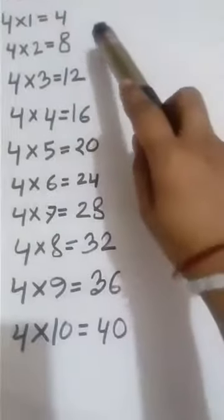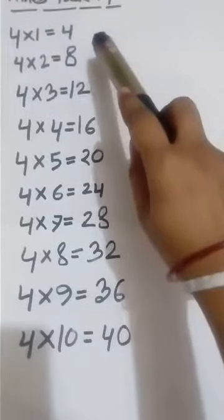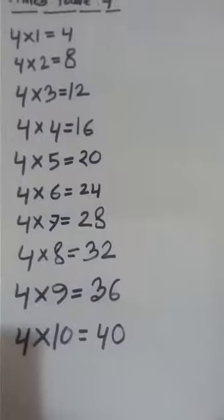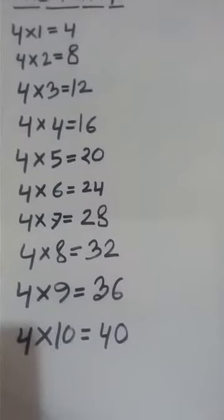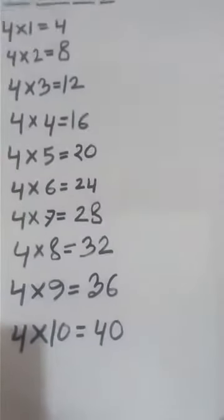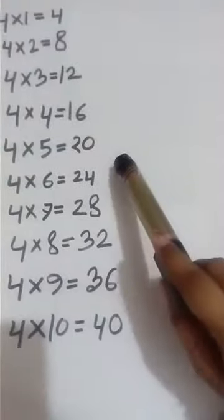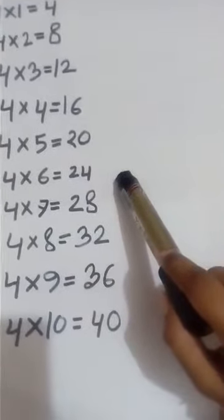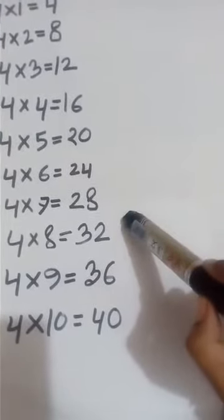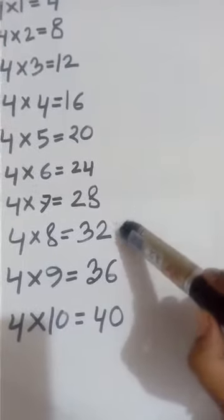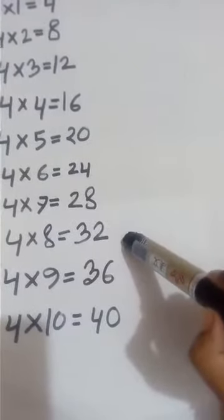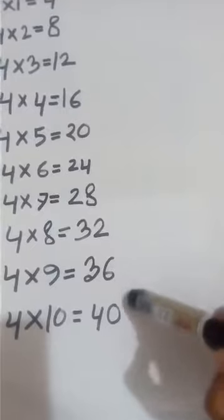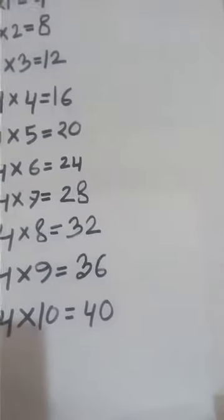Again: 4 times 1 is 4. 4 times 2 is 8. 4 times 3 is 12. 4 times 4 is 16. 4 times 5 is 20. 4 times 6 is 24. 4 times 7 is 28. 4 times 8 is 32. 4 times 9 is 36. And 4 times 10 is 40.